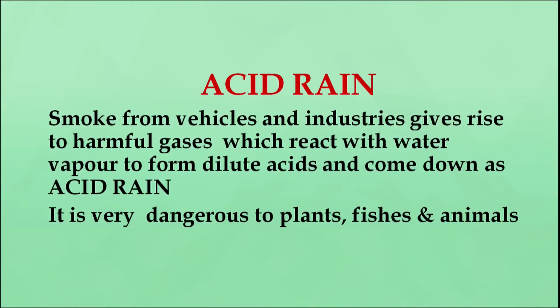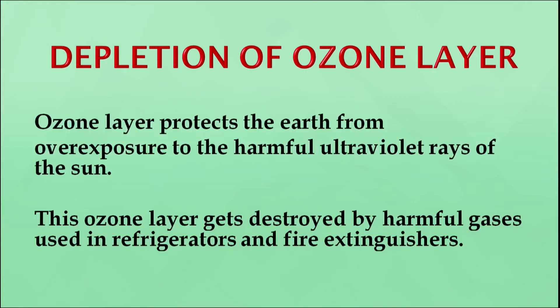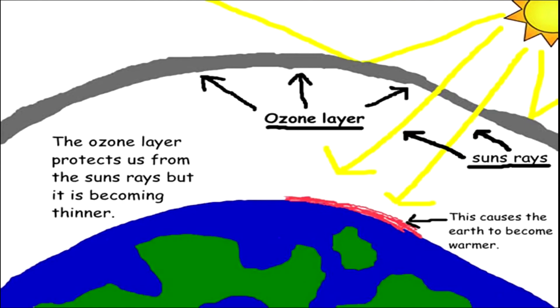Acid rain: smoke from vehicles and industries gives rise to harmful gases which react with water vapour to form dilute acids, and that comes down as acid rain. It is very dangerous for plants, fishes and animals. Here is a picture depicting how acid rain is formed and how it causes degradation to our environment. Depletion of the ozone layer: the ozone layer protects the earth from over-exposure to harmful ultraviolet rays of the sun. This ozone layer gets destroyed by harmful gases used in refrigerators and fire extinguishers. Here is a picture depicting how the ozone layer is protecting us from the UV rays of the sun.